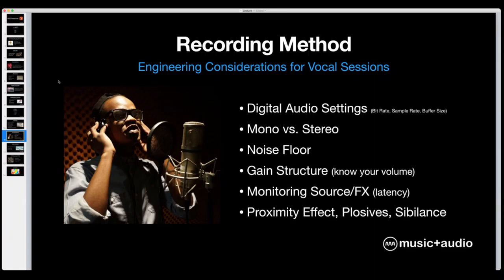When recording, know about proximity effect, plosives, and sibilance. Proximity effect happens when you get really close to the mic — the closer you get, the bassier your voice will get. Sometimes this is desirable, but sometimes it causes problems. Make sure your singer knows how close they can get to the mic. A pop filter setup can prevent singers from getting too close, which the engineer may set up purposefully to avoid proximity effect — or you might want proximity effect and get close for that wide, warm sound.